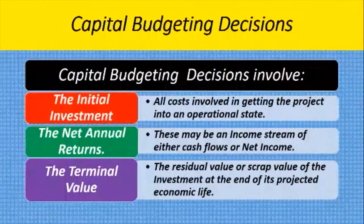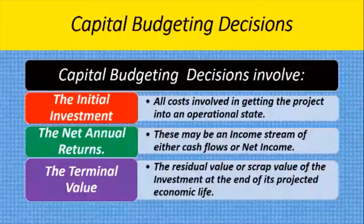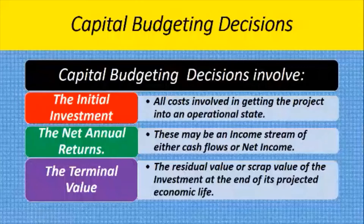Capital Budgeting Decisions involve three components. First, the initial investment — all the costs involved in getting the project into an operational state. Second, the net annual returns, which may be an income stream of either cash flows or net income. And third, the terminal value, which is the residual or scrap value of the investment at the end of its projected economic life.